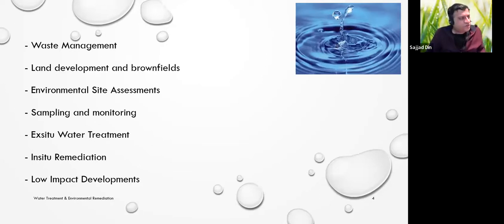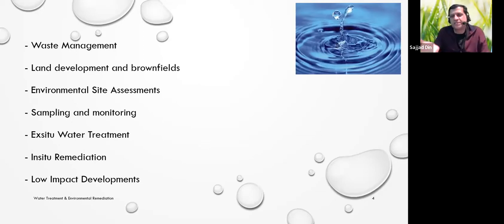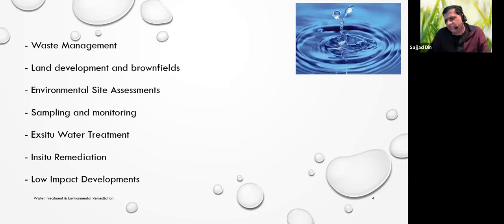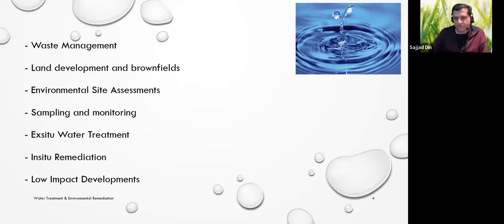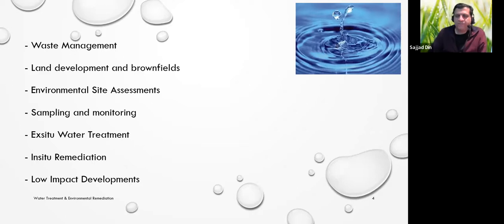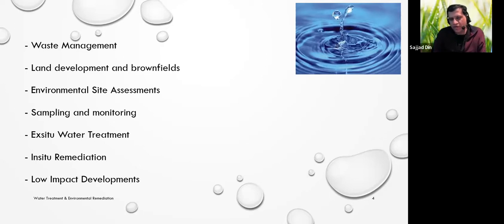Another area is ex-situ water treatment, where you pull water out of the ground, treat it, and pump it out. Or sometimes water has already come out of the subsurface, or it's surface water with contamination that needs treatment. For example, stormwater ponds sometimes need to be dredged, and before you pump that water out and send it to a creek, you have to treat it.